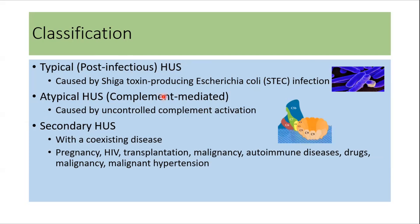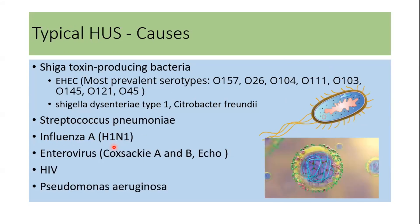Atypical HUS usually occurs because of uncontrolled complement activation. Secondary HUS occurs with a coexisting disease like malignancy or other autoimmune diseases. Typical HUS is caused by Shiga toxin-producing bacteria — this is the most common cause. The toxin is produced by various E. coli serotypes like O157, O26, and O104, which are all responsible for typical HUS.